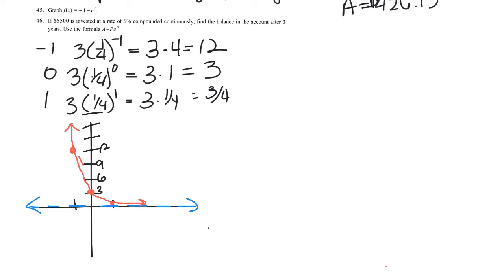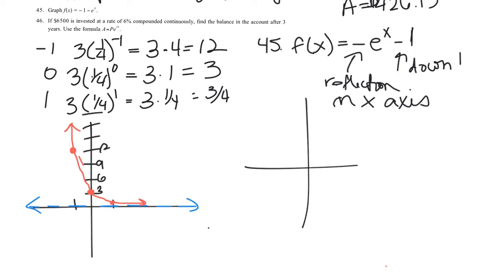Number 45 is f of X. I'm going to rewrite this: negative E to the X minus 1. So this is a translation down 1 and a reflection in the X-axis. The reflection in the X-axis goes first, and then down 1. E to the X is an exponential growth function.